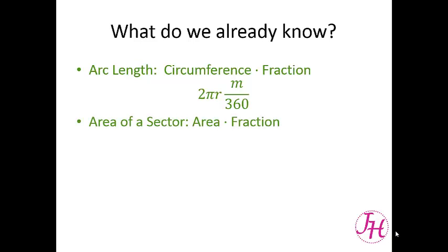The area of a sector is the area of the circle times the fraction of the circle that the sector is. You have πr² which is the area of the circle, times m, which is the number of degrees in the central angle of the sector, over 360.